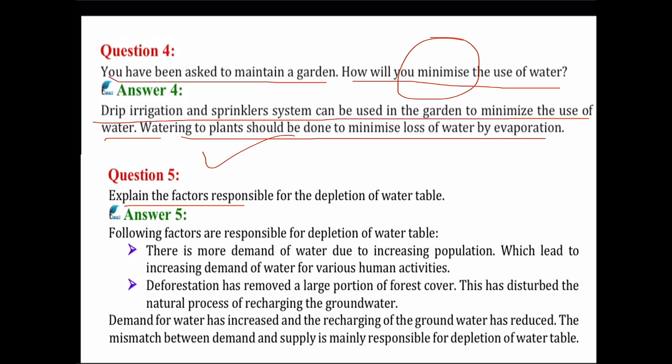Next is question number 5: explain the factors responsible for the depletion of water table — very very important. Following factors are responsible for depletion of water table. First point: there is more demand for water due to increasing population, which led to increasing demand for water for various human activities. Increasing population leads to increased demand for water for domestic and drinking purposes, which causes reduction of the water table.